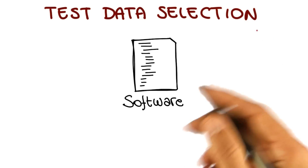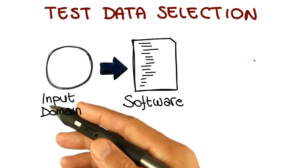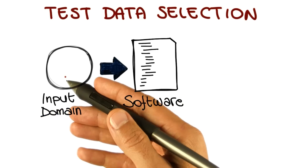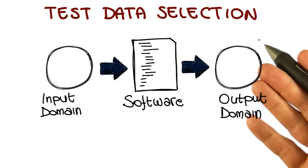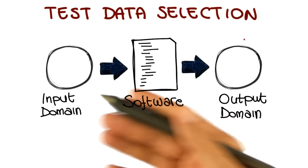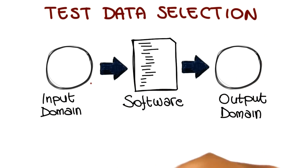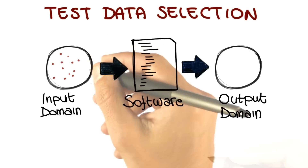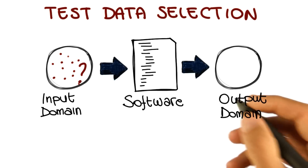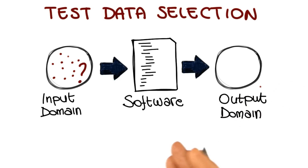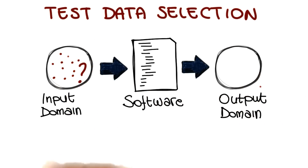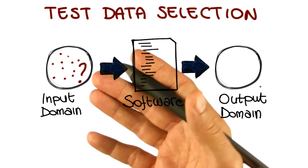And it can be expressed as follows. Let's consider our software. As usual, we have our input domain, which is the set of all the inputs for the software, and our output domain, which is the set of corresponding outputs for these inputs. So the question here is: how can we select a meaningful set of inputs in our domain, and corresponding outputs, since test cases are an input plus an expected output?